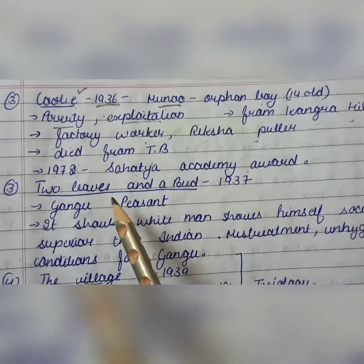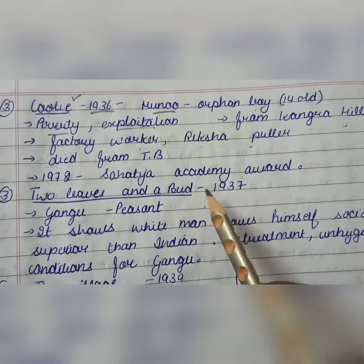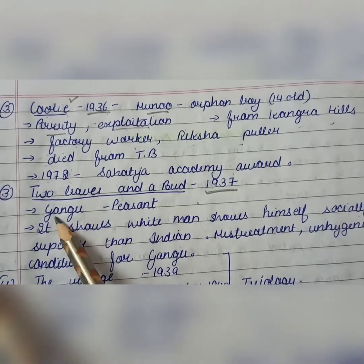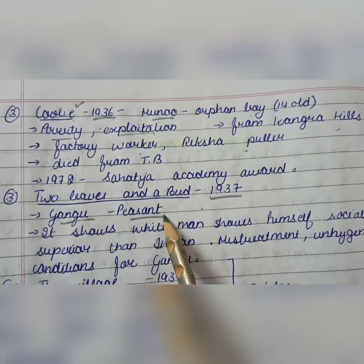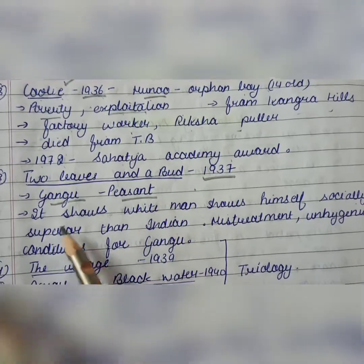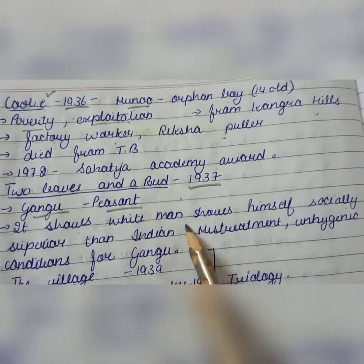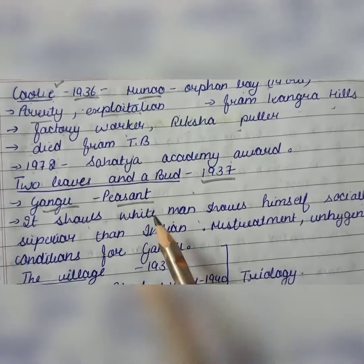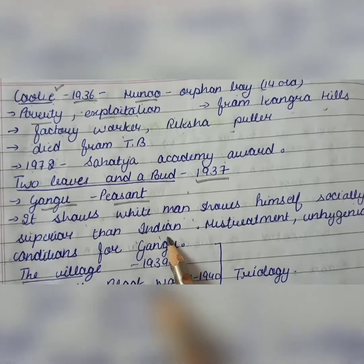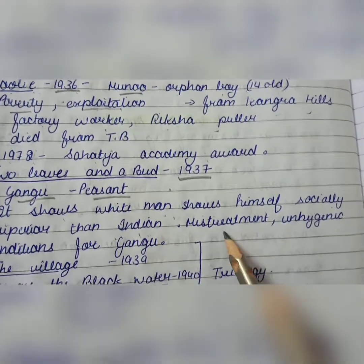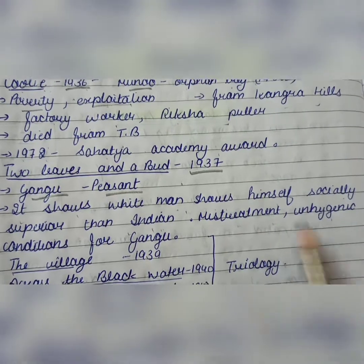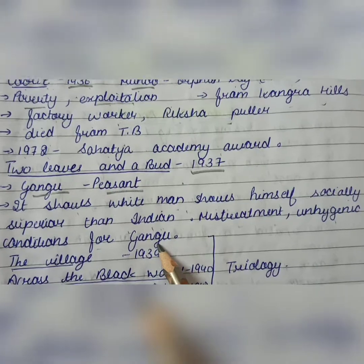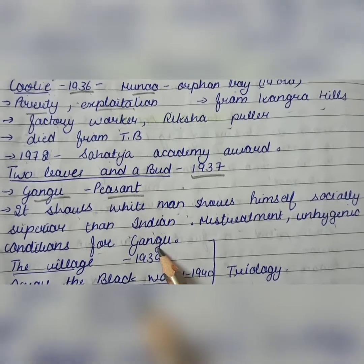Next work is Two Leaves and a Bud, published in 1937. The main character is Gungu, who is a peasant. The work shows how the white man considered himself socially superior to Indians. Gungu lives in very unhygienic conditions because he is Indian, and the white man doesn't bother about that.